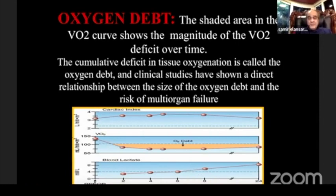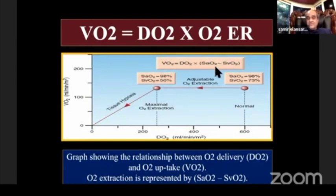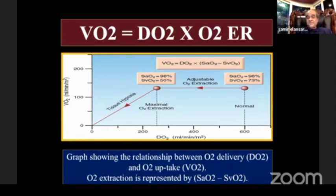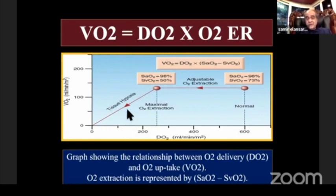Oxygen uptake equals oxygen delivery multiplied by the extraction fraction. If oxygen delivery goes down, extraction rises. Normally 20 to 30%, but if it rises to a maximum of 50%, any drop in oxygen delivery will directly affect oxygen uptake. There is then a linear decrease in oxygen availability and uptake, and the patient is suffering from tissue hypoxia.